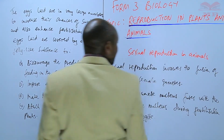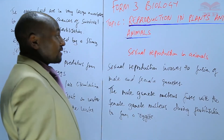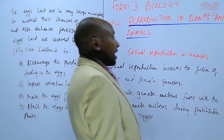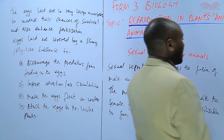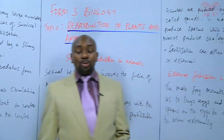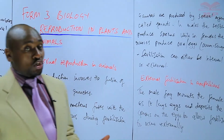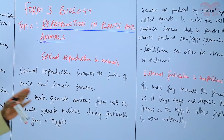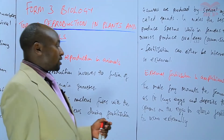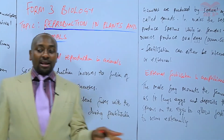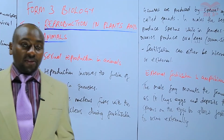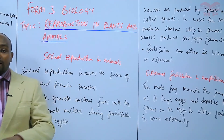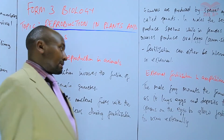External fertilization also occurs in fish — not just amphibians. In the case of fish, the female lays eggs in the water and the male comes and sheds the sperms onto those eggs.